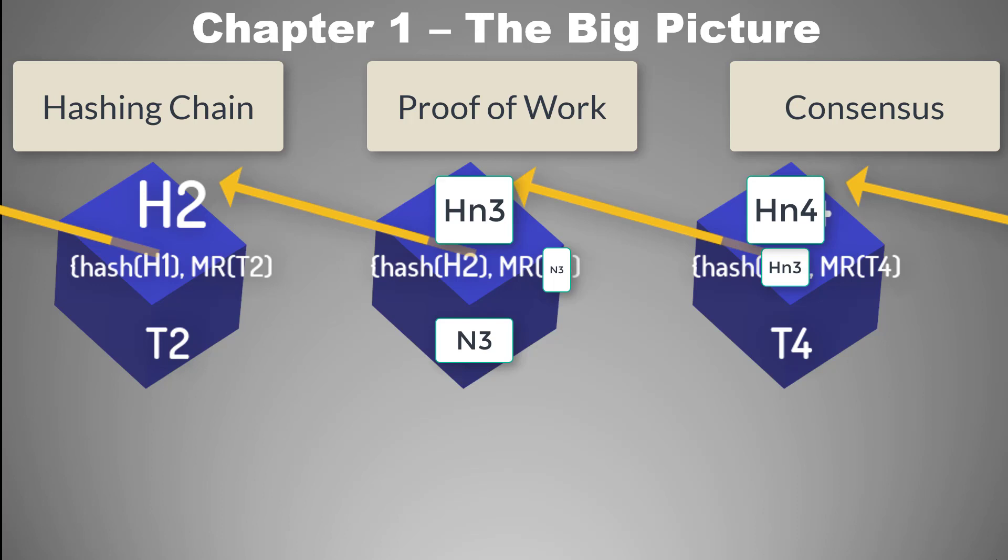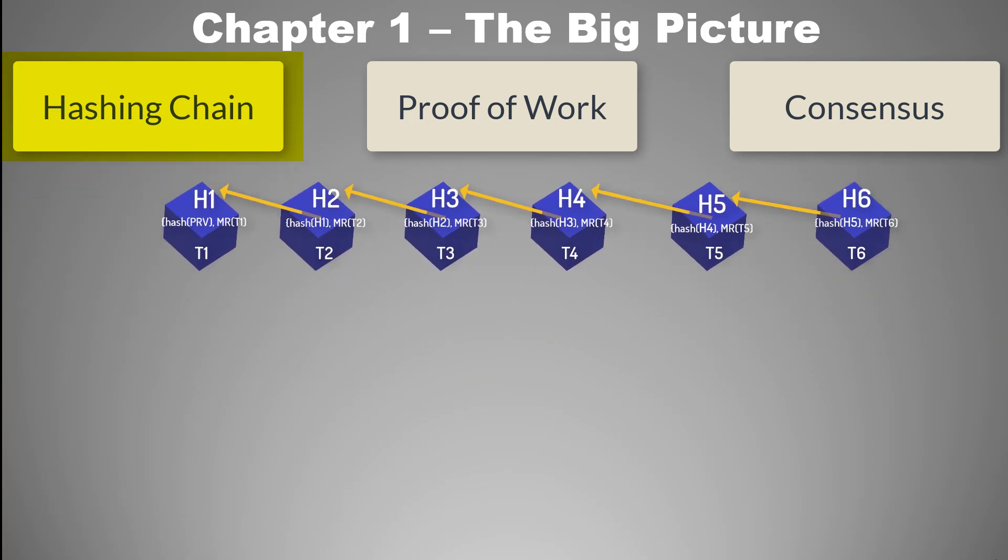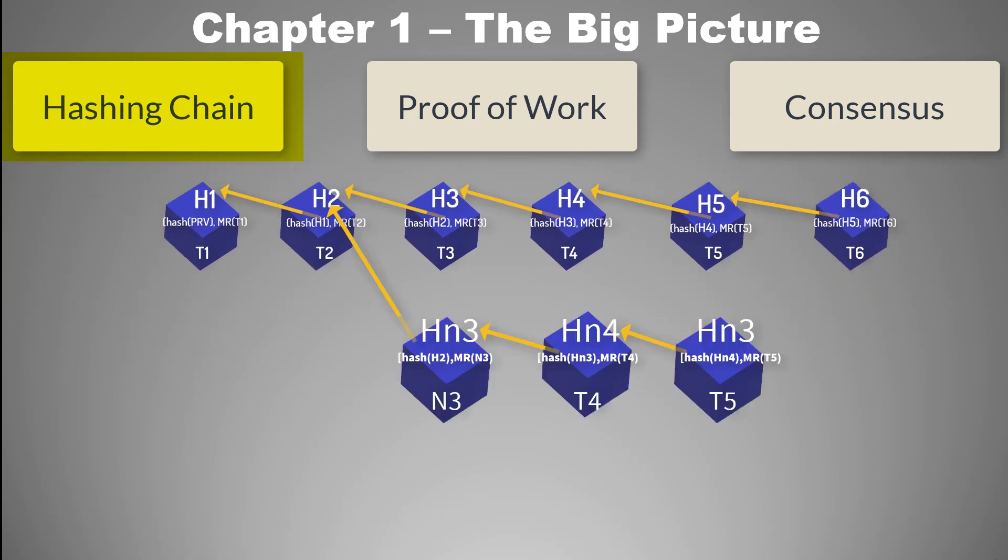So hashing chain makes sure that if you alter any block, you will have to alter all the subsequent blocks. In fact, if you do that, you will create another chain from the middle, because when you alter the block, it's a new block. This creates a branch.